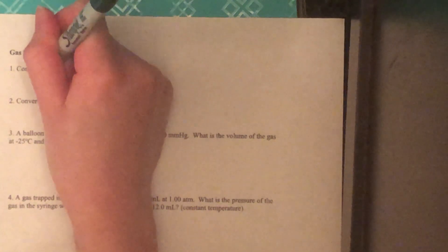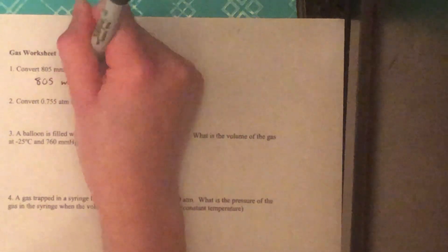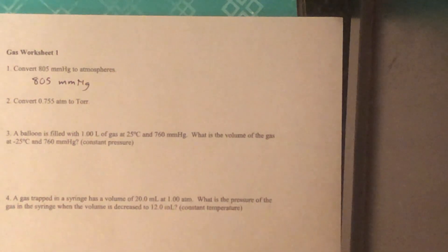So we'll start out with what we're given, the 805 millimeters mercury. We're going to set up dimensional analysis so that our units cancel. So we know that one atmosphere is 760 millimeters of mercury. So we're going to want the millimeters mercury on the bottom so that our units cancel.